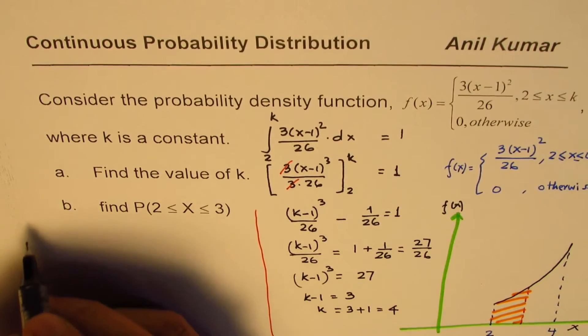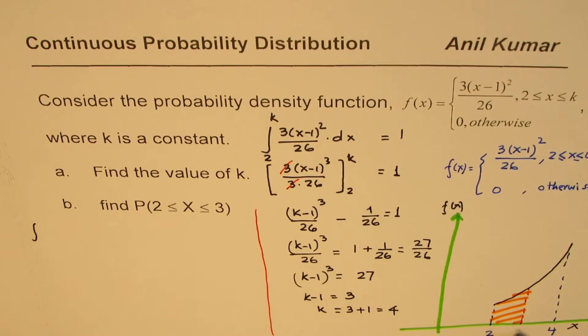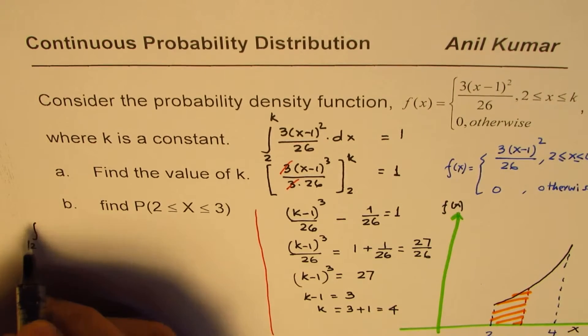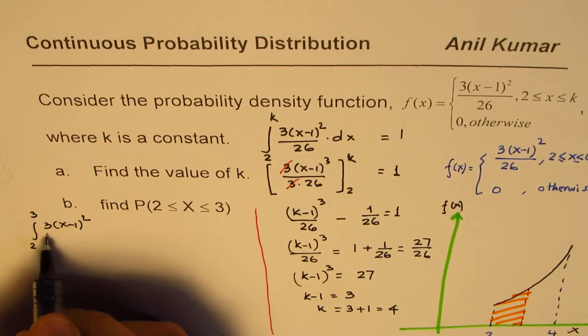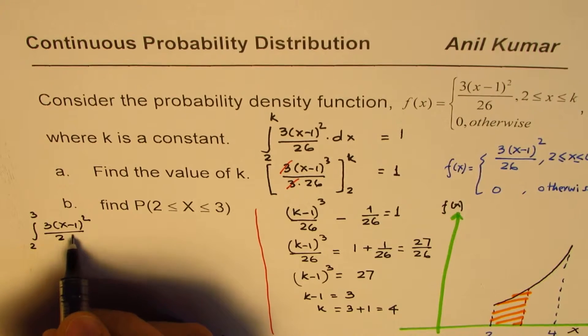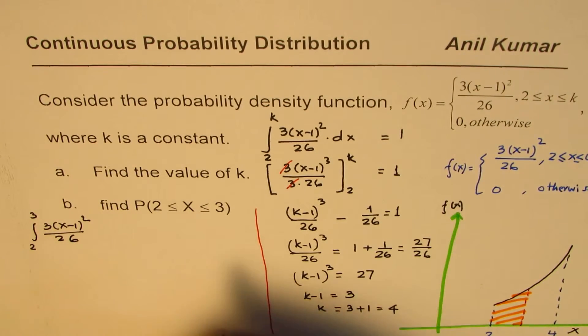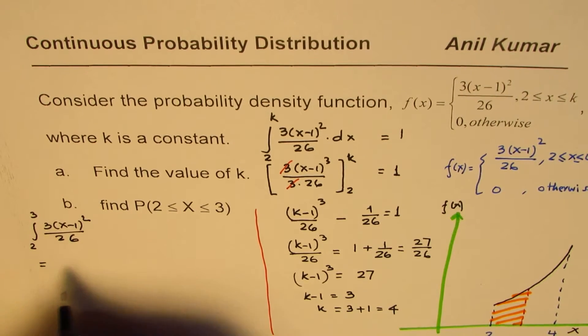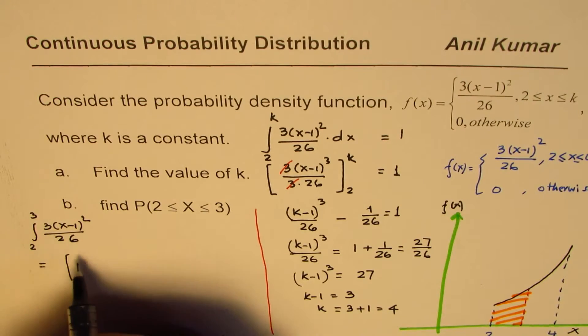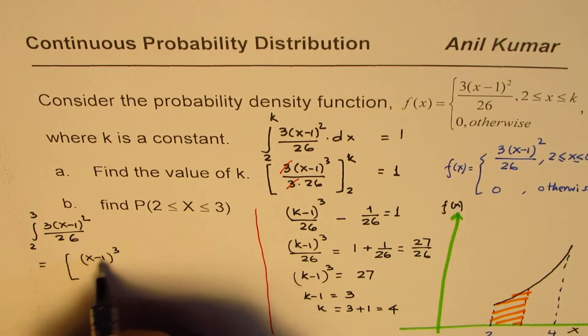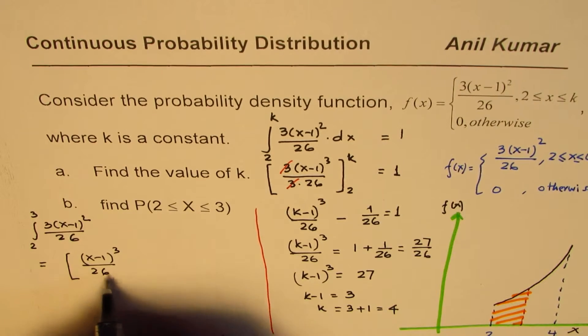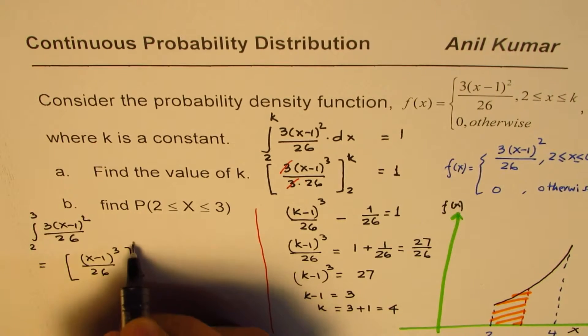So in that case, we will do the integration over this period, which is from 2 to 3, the function is 3(x-1)² over 26, and this is equal to, we will write the simplified version, which is (x-1)³ over 26, from 2 to 3.